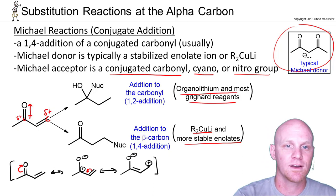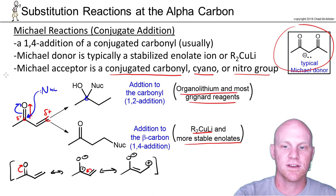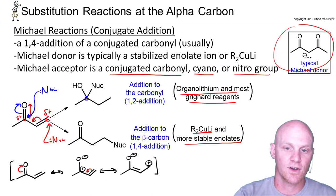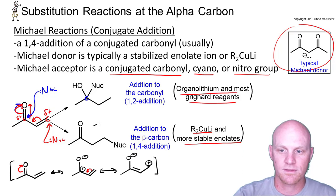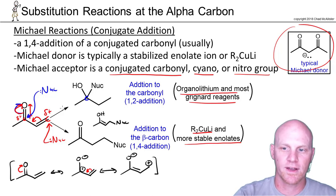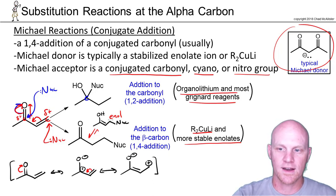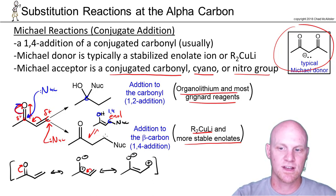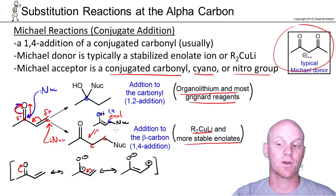A Grignard-type nucleophile attacks the carbonyl and kicks the electrons up — that's why it adds to that carbon. Whereas a softer or weaker nucleophile like a lithium dialkylcuprate attacks the beta carbon; electrons get kicked over and then up to the oxygen, producing an enol that tautomerizes to the more stable keto form. The two groups were added to atoms one, two, three, four apart, which is why it's called 1,4 addition — based on where they're initially added, not where they end up.